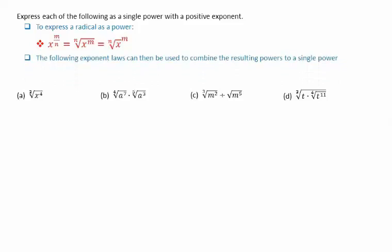The following exponent laws can then be used to combine the resulting powers to a single power: x to the a times x to the b equals x to the a plus b; x to the a over x to the b equals x to the a minus b; x to the a raised to the b equals x to the a times b; and x to the negative a equals 1 over x to the a.